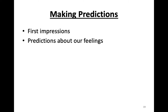What about first impressions? It turns out we can make fairly accurate predictions based on a small amount of information. Generally the more information we have, the more accurate our predictions. However, we can be accurate based on a small amount of data. We often make predictions based on our first impressions, which are based on our initial exposure to someone or something. Given that sometimes our first impressions are wrong, our ability to make predictions based on first impressions can be problematic.